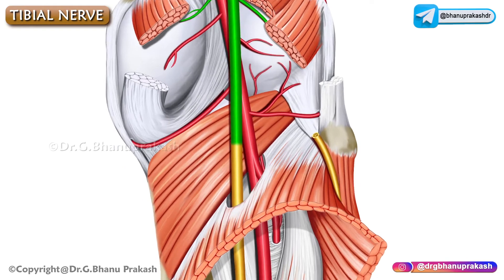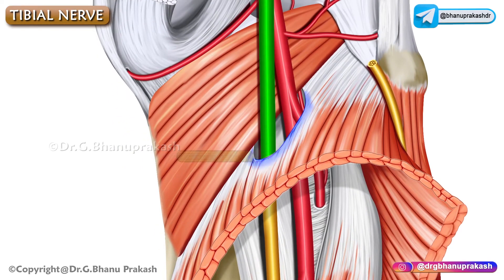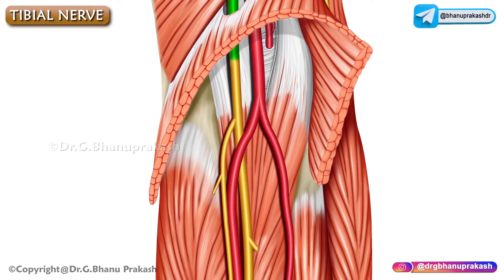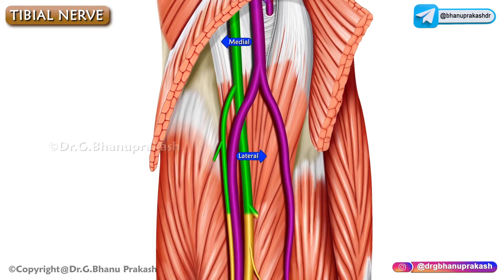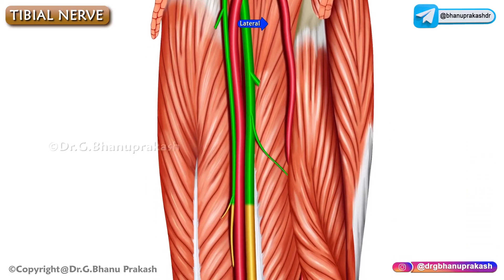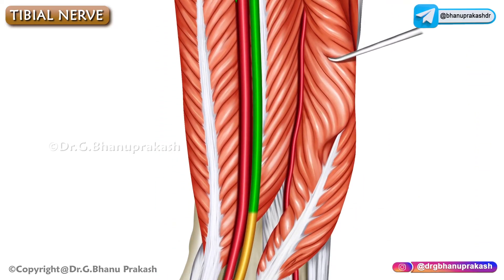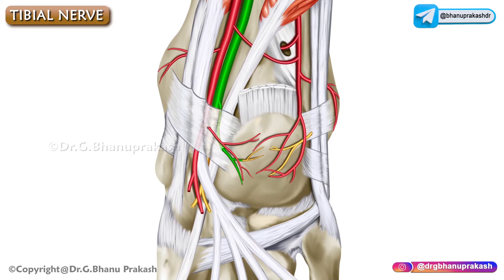From the popliteal fossa, the tibial nerve enters the posterior compartment of the leg by passing deep to the tendinous arch of the origin of the soleus, along with the posterior tibial vessels. In the leg, the tibial nerve is medial to the artery at first, then crosses posterior to the artery from medial to the lateral side, and then runs along the lateral side of the artery.